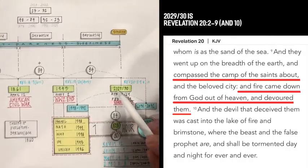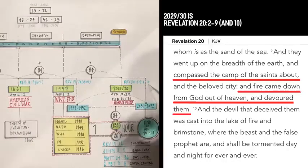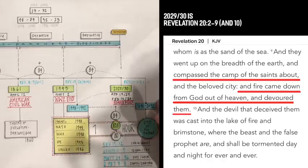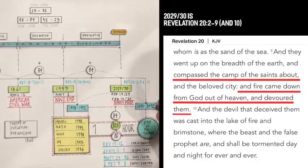And the last one, 20.29 to 20.30, is Revelation 20:2-9 and verse 10. We're just going to look at verse 9 and 10, which says, And they went up on the breadth of the earth and came past the camp of the saints about, and the beloved city. And fire came down from God out of heaven and devoured them. And the devil that deceived them was cast into the lake of fire and brimstone, where the beast and the false prophet are, and shall be tormented day and night, forever and ever.